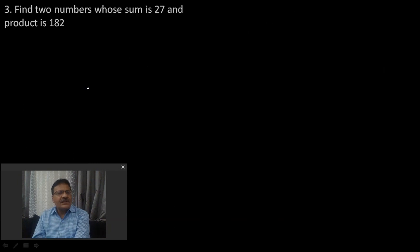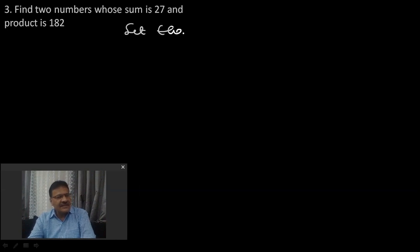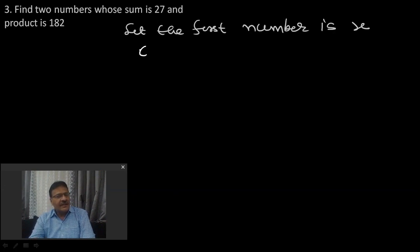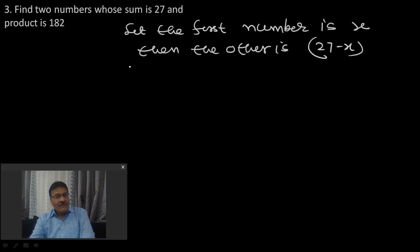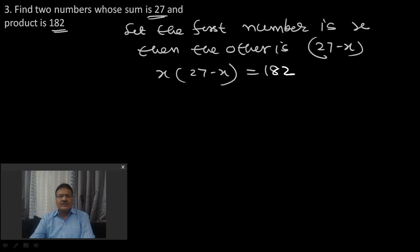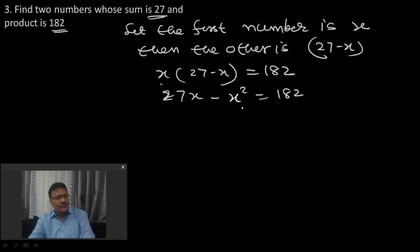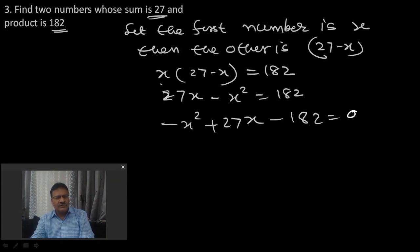Next question: Find two numbers whose sum is 27 and product is 182. Let the first number be x, then the other is (27 − x). Their product: x(27 − x) = 182, so 27x − x² = 182, giving x² − 27x + 182 = 0.